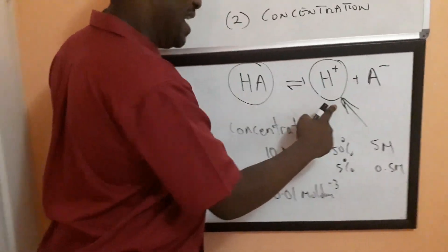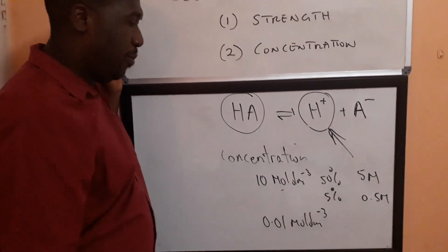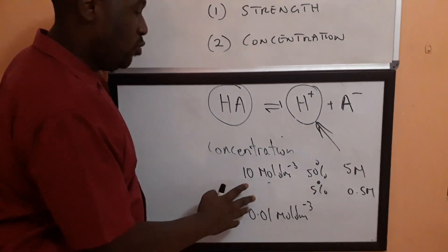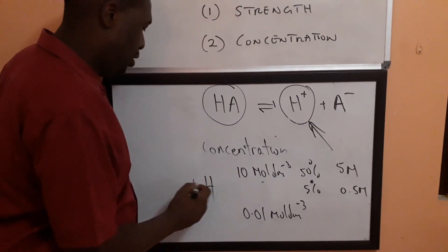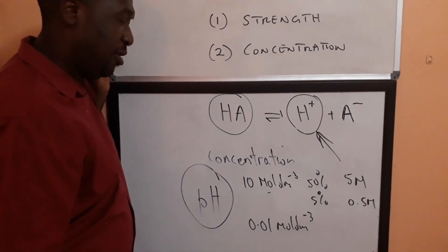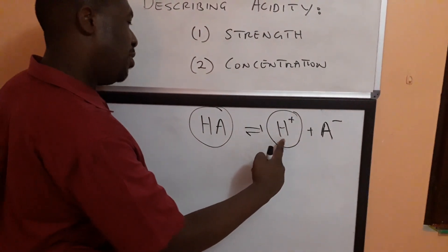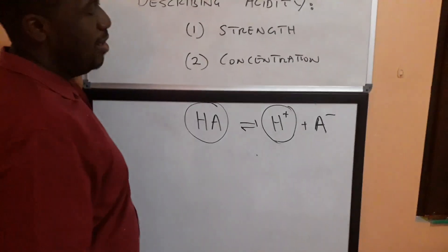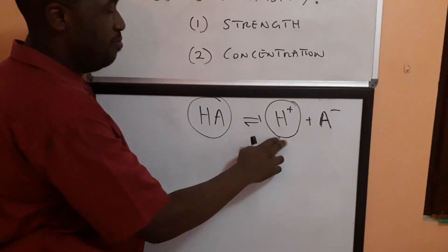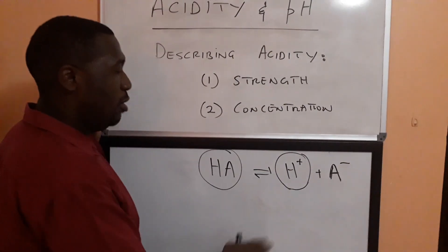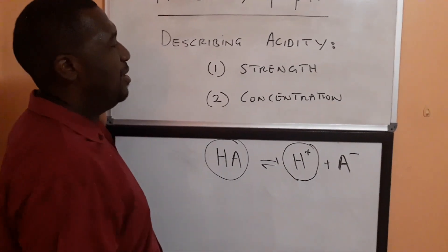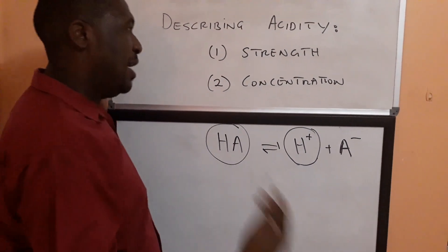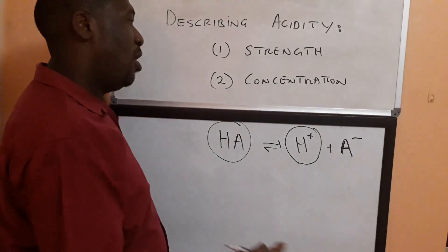So how do we account for both factors which affect the amount of H plus in a solution? We use what we call pH. We're going to look at pH more closely. Now since we know that it's the H plus ions which are the active ingredient in an acid, then we have to figure out a way to measure the H plus ions that is more precise and accurate than using these vague concentration terms. Whether it's concentrated or dilute or vague strength terms. Whether it's very strong or weak acid.